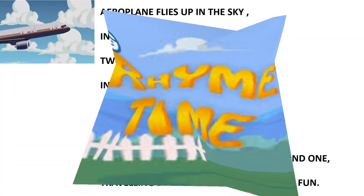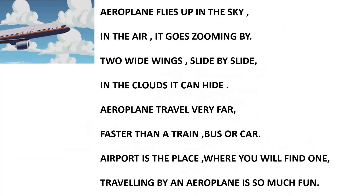So students, hear how the poem goes. Aeroplane flies up in the sky, in the air it goes zooming by. Two white wings side by side, in the clouds it can hide. Aeroplane travels very far, faster than a train, bus or car. Airport is the place where you will find one. Travelling by an aeroplane is so much fun. Aeroplane flies up in the sky, in the air it goes zooming by.